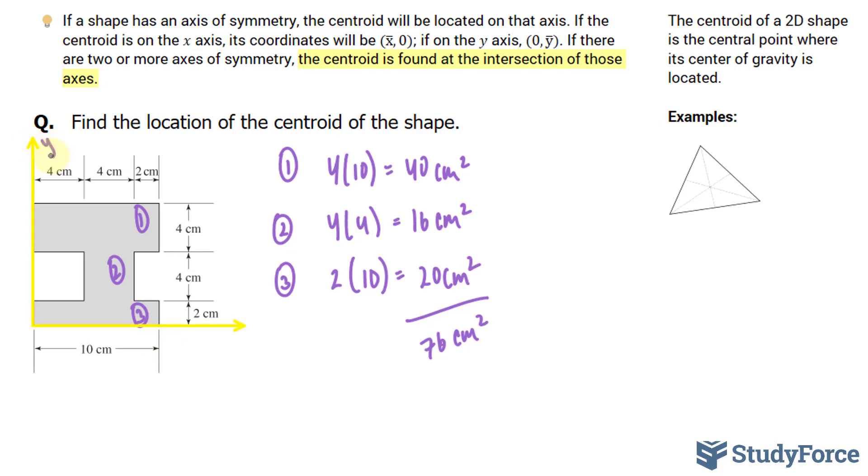So we'll call this my y-axis, and this is my x-axis. The centroid of this shape will be the midway point between here to here, which is 5, and the midway point from here to here, which is 1. So our centroid lies at 5 and 1.